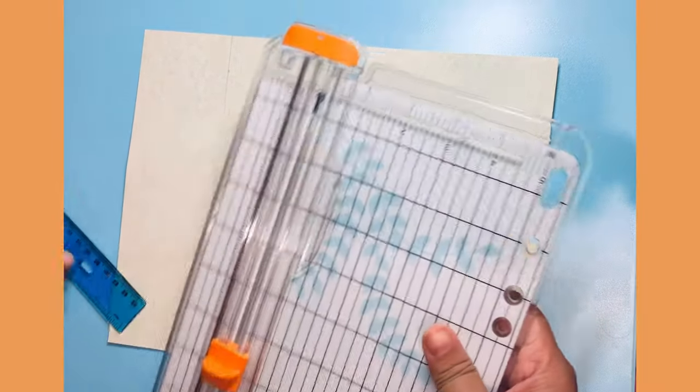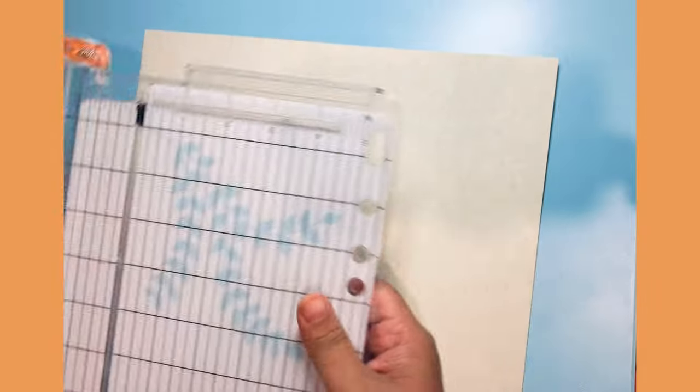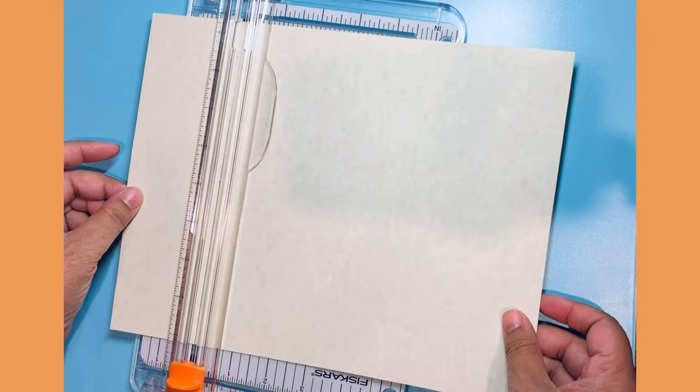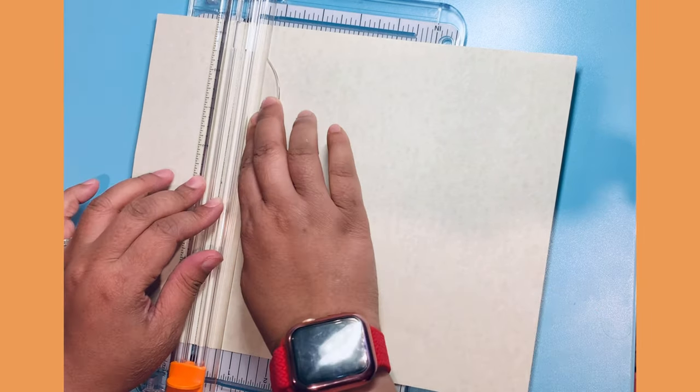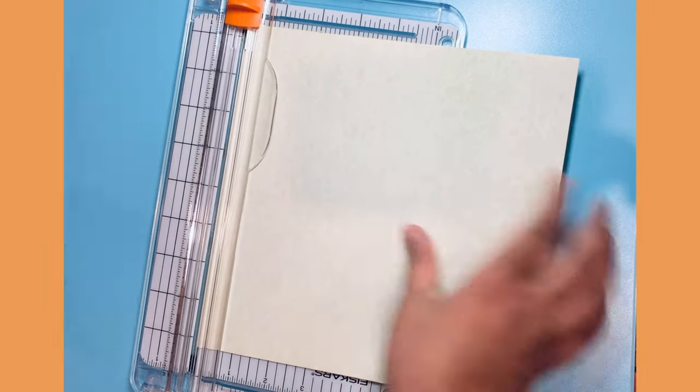So I'm just going to align the pencil mark that I just made with the wire on my cutter, and so now I have my square. Now I think this way is the easiest way I have found.